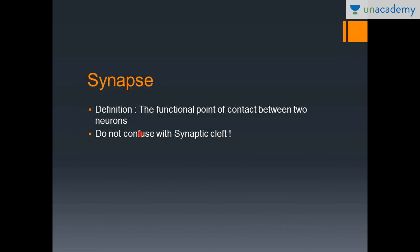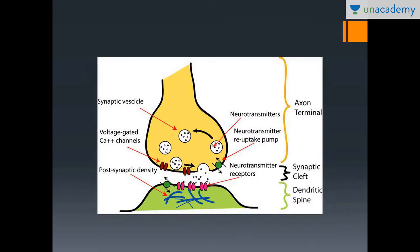The synapse is the functional point of contact between two neurons. Information flows from the axon terminal of one neuron to the dendrite of the next neuron. The small space between the axon terminal and the dendrite is called the synaptic cleft.